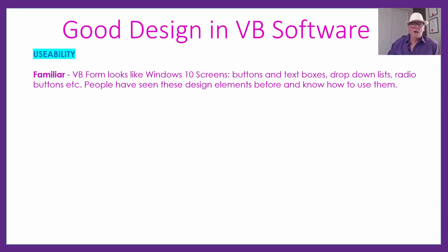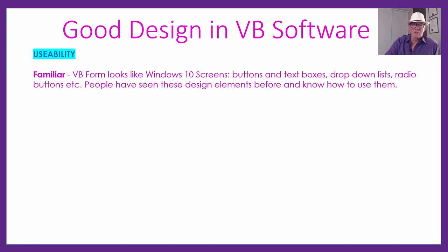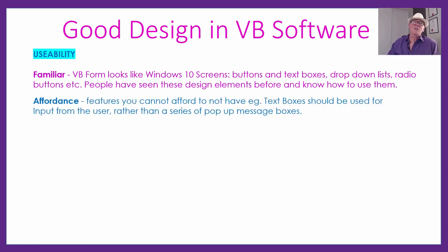On the usability part, there are a lot more criteria. Familiar also comes into usability — if it looks like a Windows 10 screen, people will recognize those design elements like dropdown lists where they click the down arrow to get the list and immediately know how to use it. Affordance — everyone thinks straight away that it means how much money it costs, but affordance doesn't mean that. The word for that is affordability.